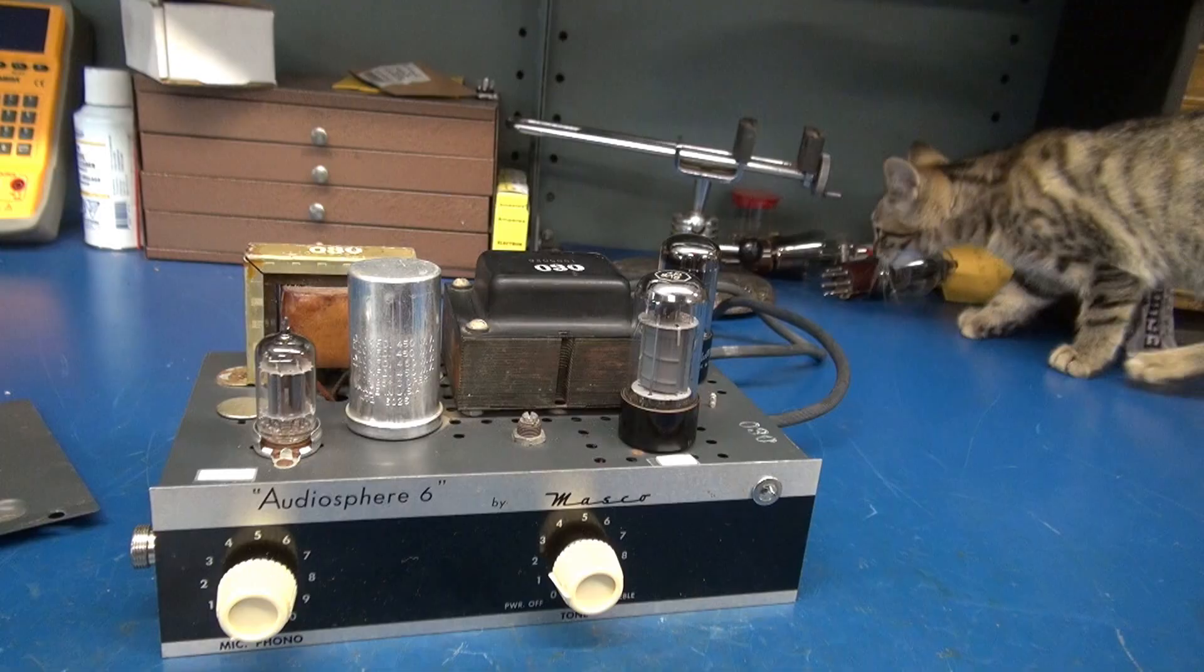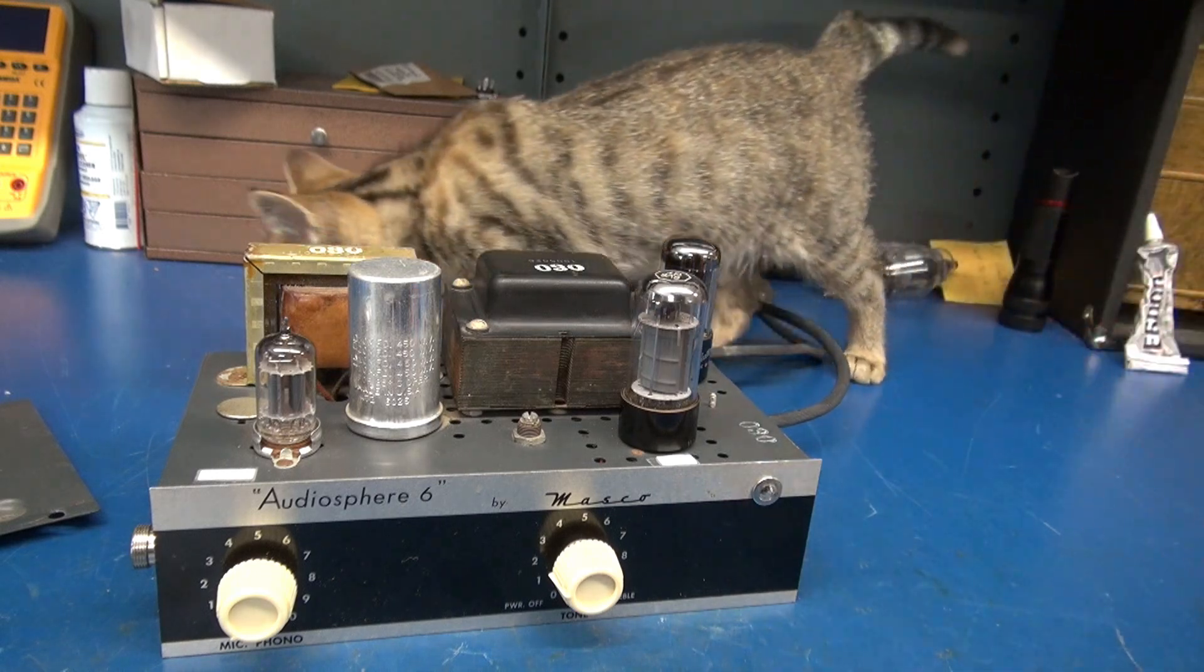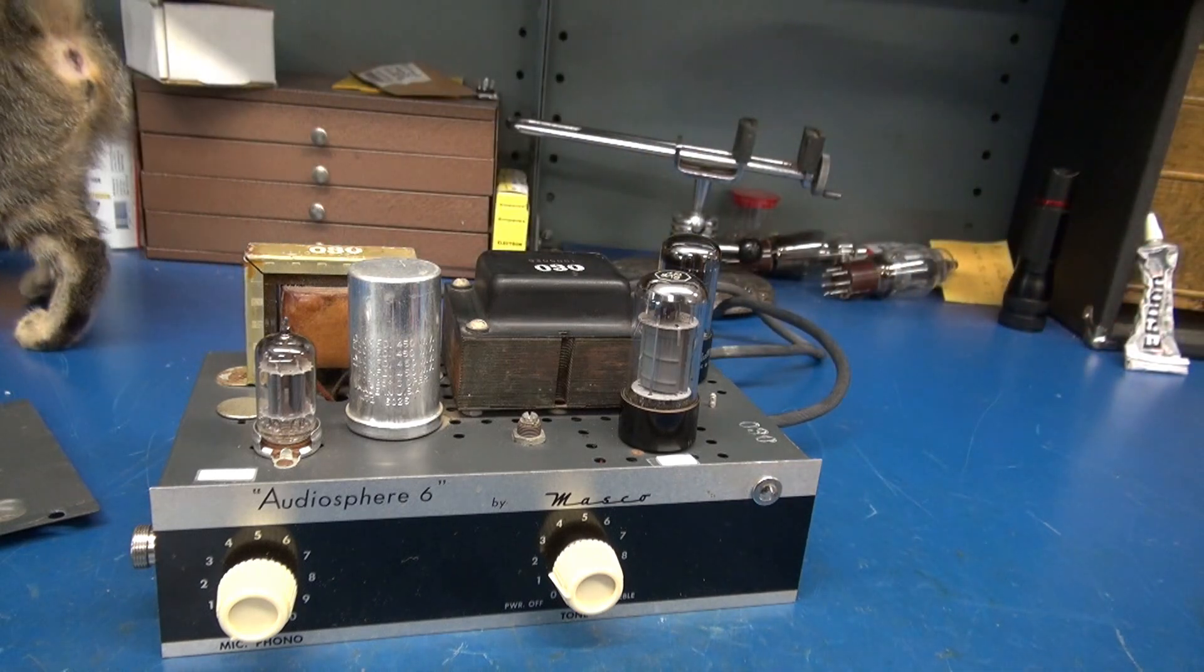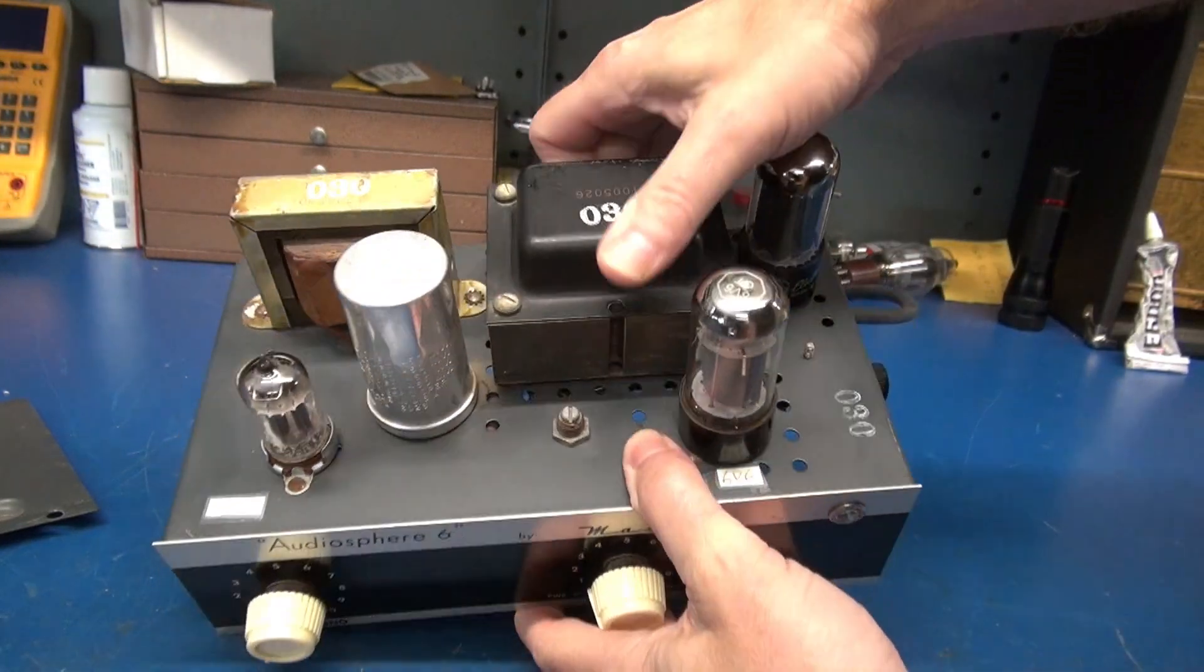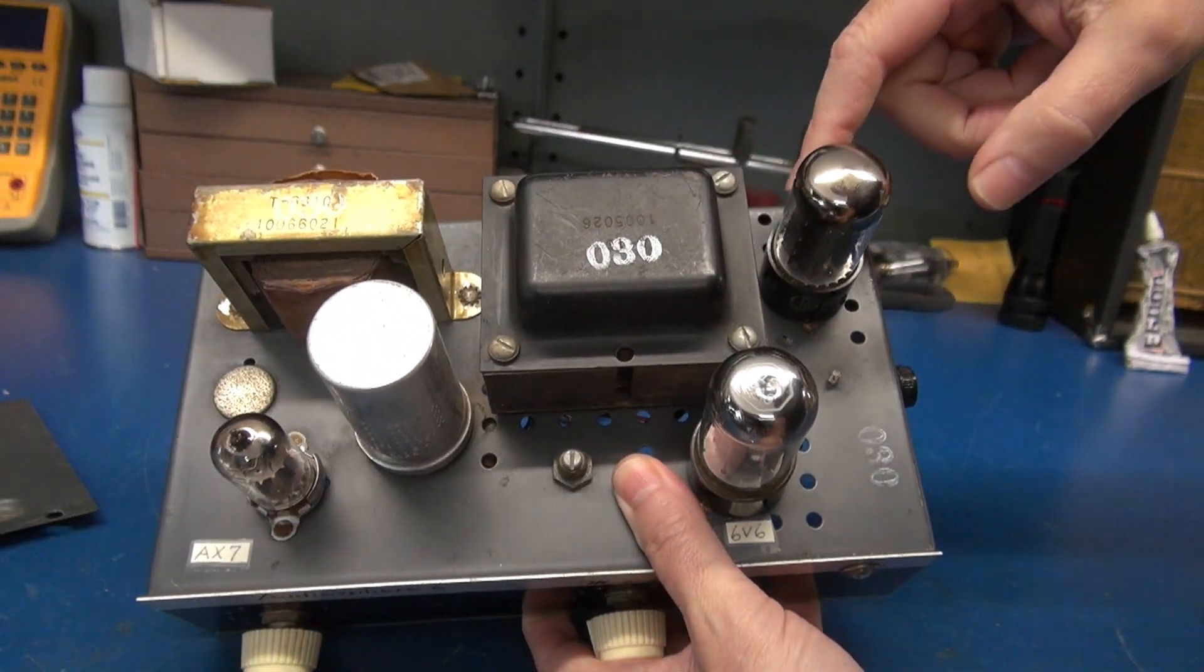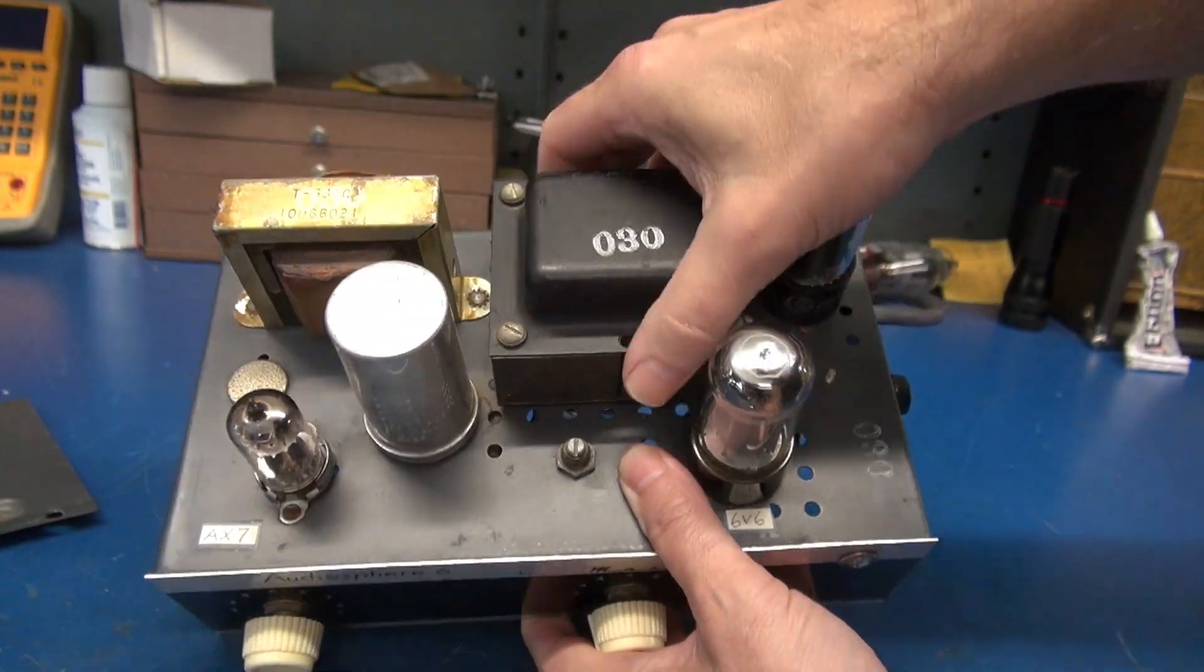So let's give it a look over. All right, here's the top side of the little Masco amplifier. My assistant, Polly, is going to help me look it over, see if she actually pays attention. So this is our power transformer, rectifier, output tube, preamp tube, filter cap, output transformer.